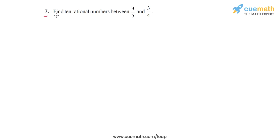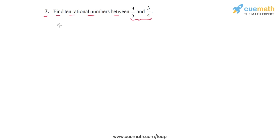In question 7, we have to find 10 rational numbers between the two numbers 3/5 and 3/4. Any 10 rational numbers between these two numbers will work as an answer.